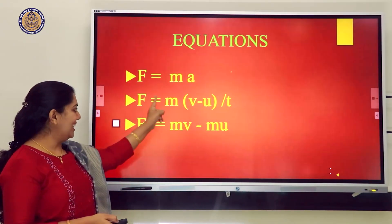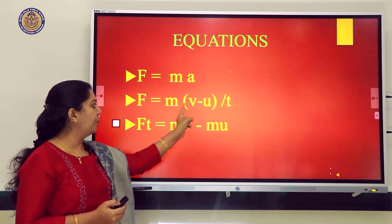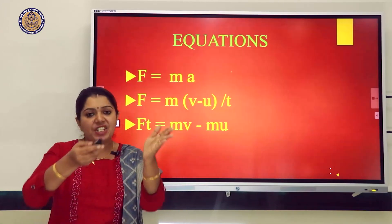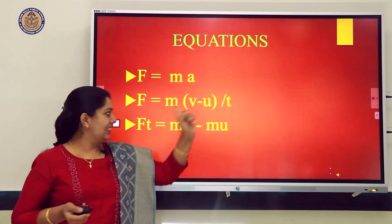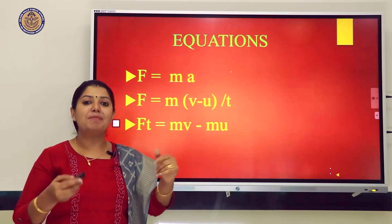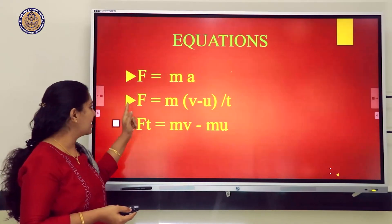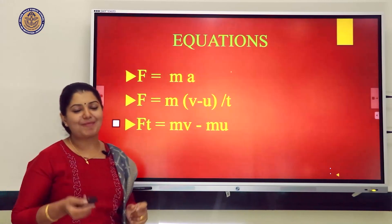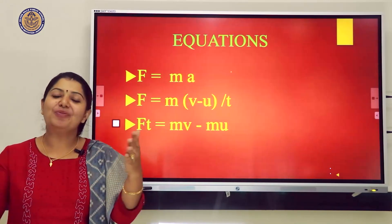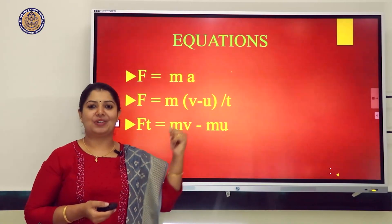Using the equation F = M × (V − U) / T, when you pull your hands back while catching, the time T increases. If time increases, the force decreases — the impact of the force is less. So you can very comfortably catch the ball by doing so.